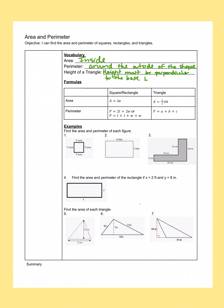Area of a square or rectangle is just length times width. To find the area of a triangle, you use one half times base times height, where base and height must be perpendicular. For perimeter formulas, we are essentially just adding all the way around the shape.